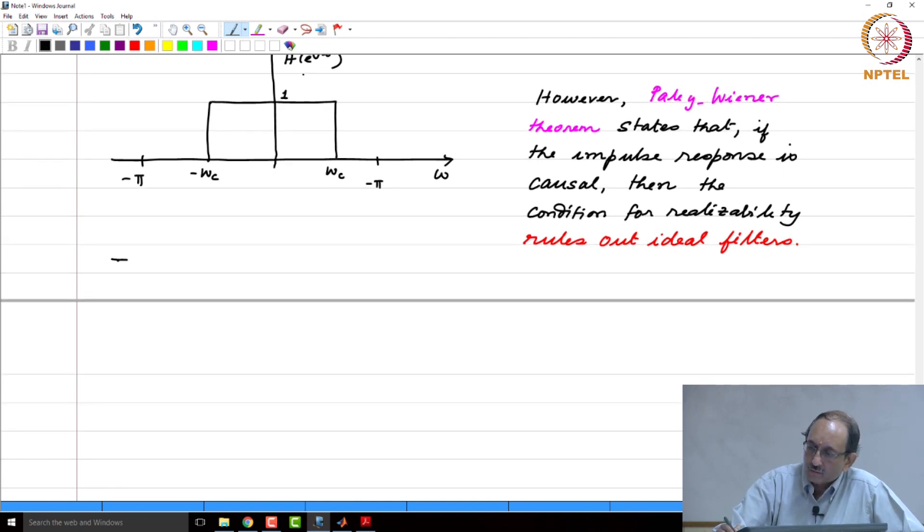Therefore, these ideal filters, they are also called as brick wall filters, because this shape reminds you of a brick wall. So, these ideal filters have to be approximately realized.